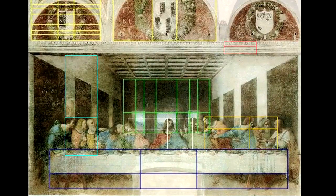Leonardo da Vinci is an example. Notice how all the key dimensions of the room, the table, and ornamental shields in Leonardo da Vinci's Last Supper were based on the golden ratio.